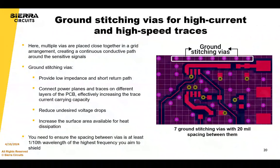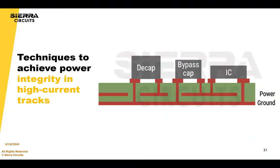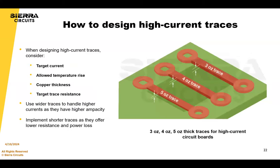Ensure that the vias are at least one-tenth the wavelength from the highest frequency you aim to shield. Now, on to techniques to achieve power integrity in high-current tracks. To design high-current PCB traces, you need to identify key factors: target current — the maximum steady-state current for the trace, typically in amps — maximum temperature rise above ambient, copper thickness, and target trace resistance. Use wider traces to handle higher currents as they have higher ampacity, and implement shorter traces as they offer lower resistance and power loss.